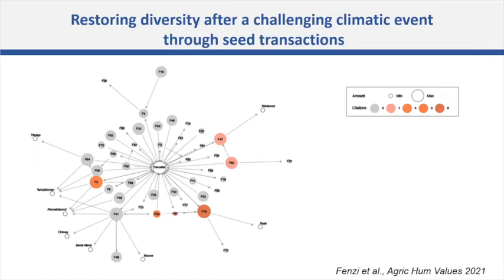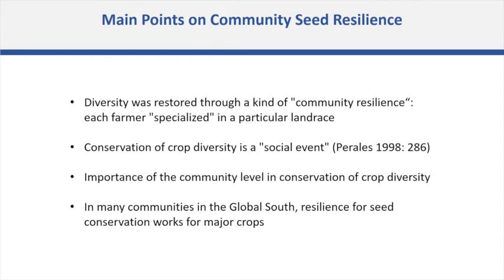Inside the main community, we could see farmers giving seeds to other farmers, with some farmers more active than others in these transactions. The diversity was restored through a kind of community resilience where each farmer is specialized in a particular landrace. Conservation of crop diversity can be understood as a social event. This highlights the importance of the community level in conservation of crop diversity — and in many communities across the Global South, resilience for seed conservation still works for major crops.